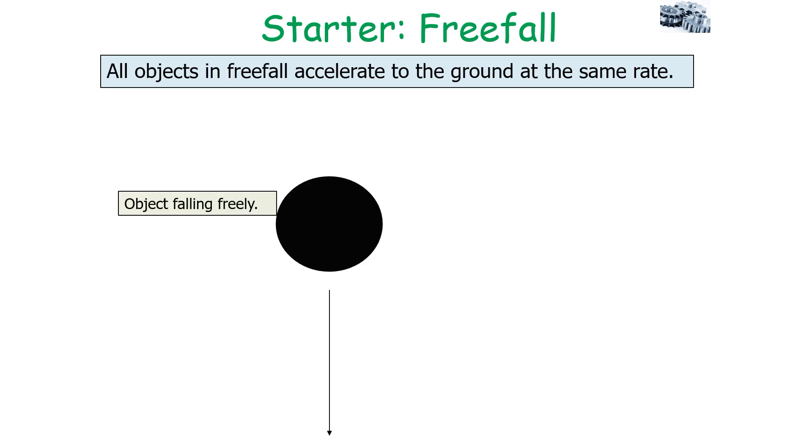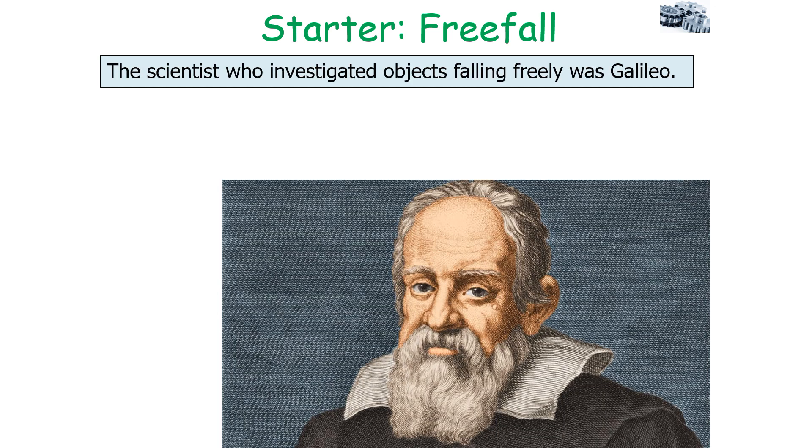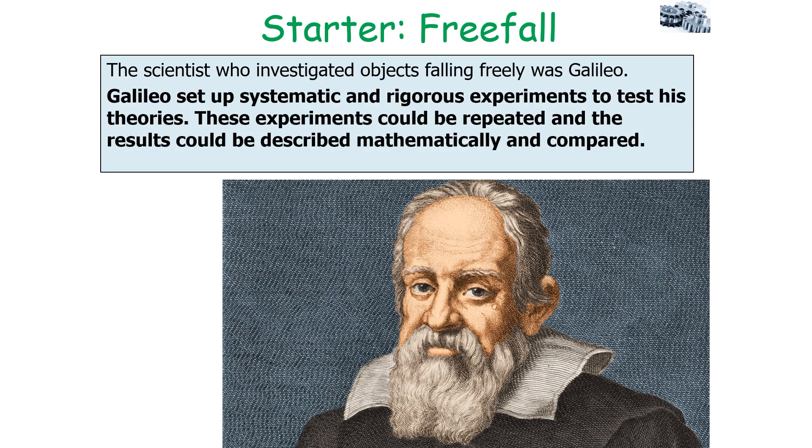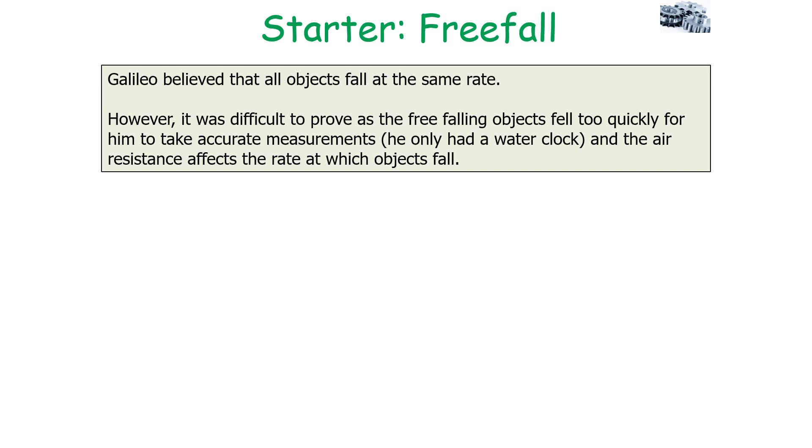All objects in freefall accelerate to the ground at the same rate, and the scientist who investigated objects falling freely was Galileo. Galileo set up systematic and rigorous experiments to test his theories, and these experiments could be repeated and the results could be described mathematically and compared between different scientists. Galileo believed that all objects fall at the same rate, but it was difficult to prove as objects fell too quickly for Galileo to take accurate measurements with only a water clock, and air resistance affected the rate at which objects fall.